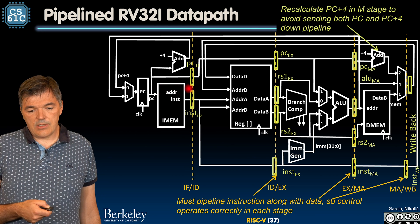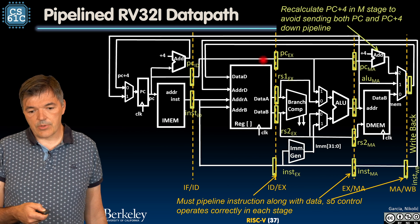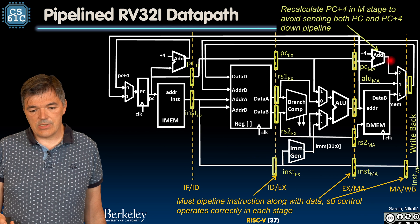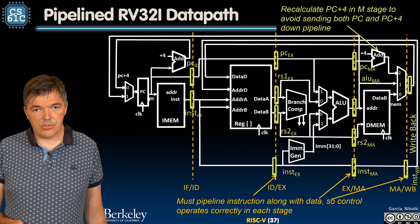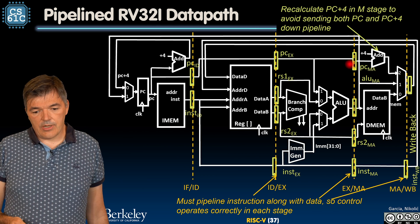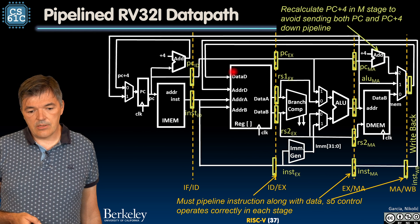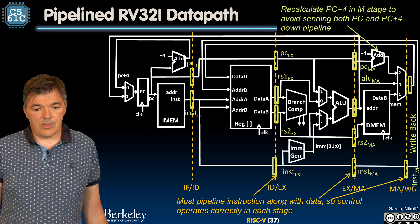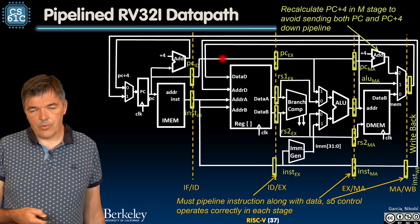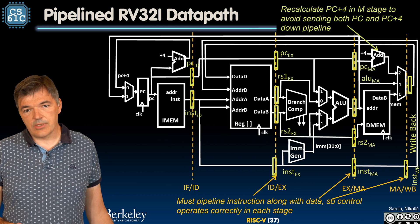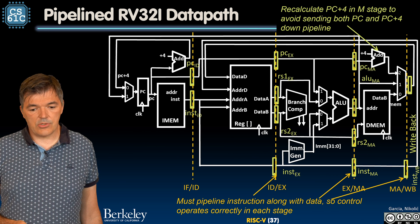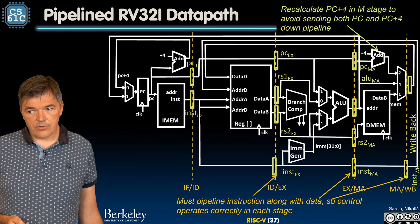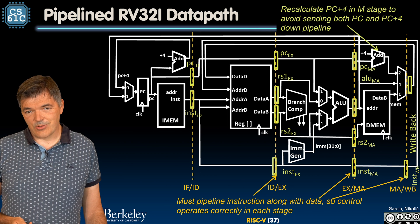We are sending down the program counter value through the pipeline, but we are not sending down the PC plus 4 value. Instead, we are recreating the PC plus 4 value in the memory access stage. That's a design decision — it is cheaper to have a fixed-function plus-4 adder rather than using two or three registers to store three 32-bit PC plus 4 values. We use the PC value in the first three stages of execution, and then we need only PC plus 4 in the memory access stage to write back if needed. This looks fairly straightforward, although there are a few catches we'll see later.